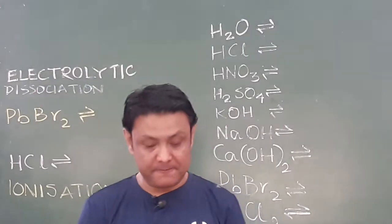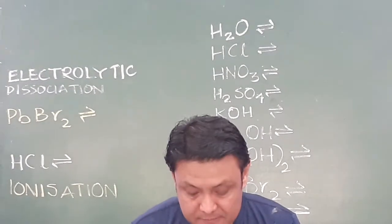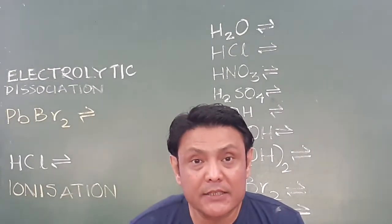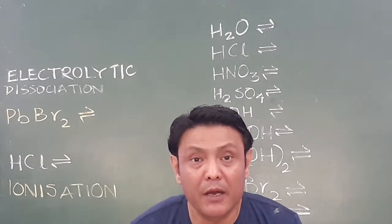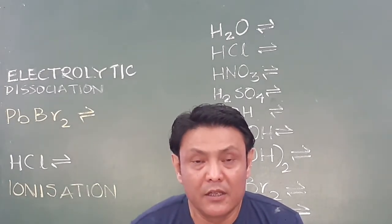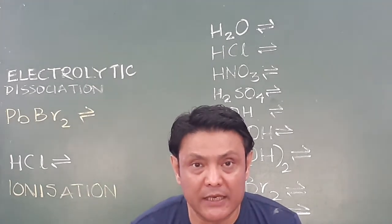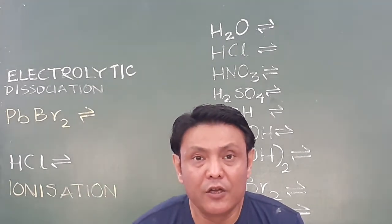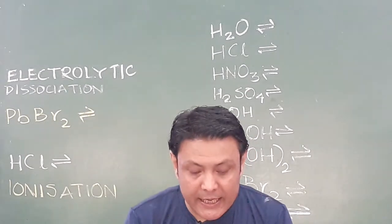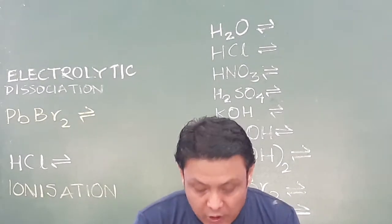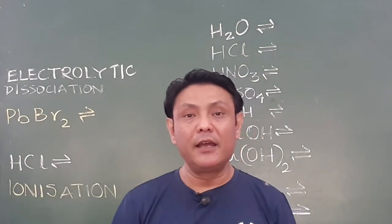Mechanism number one: an electrolyte on dissolving in water. An electrolyte is a chemical compound which dissociates in a molten state or in an aqueous solution state and helps in the conduction of electricity. An electrolyte on dissociation in water dissociates into cations and anions.